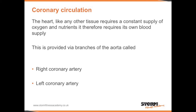Coronary circulation. The heart, like any other tissue, requires a constant supply of oxygen and nutrients; it therefore requires its own blood supply. This is provided via branches of the aorta called the right coronary artery and the left coronary artery.